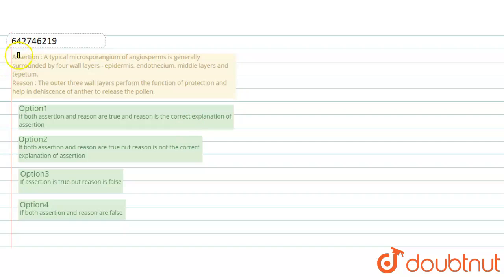Now we are going to understand this question. In this question, assertion and reason are given and we have to find whether the reason is correctly explained by the assertion or not.